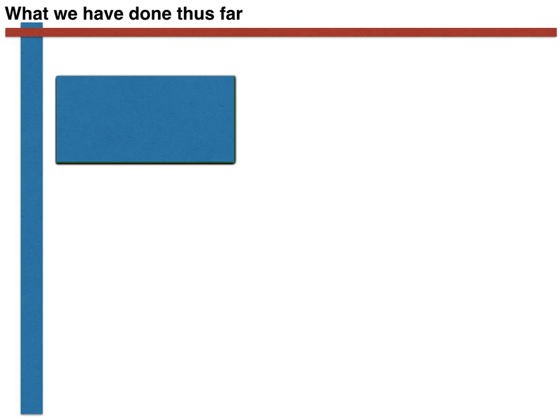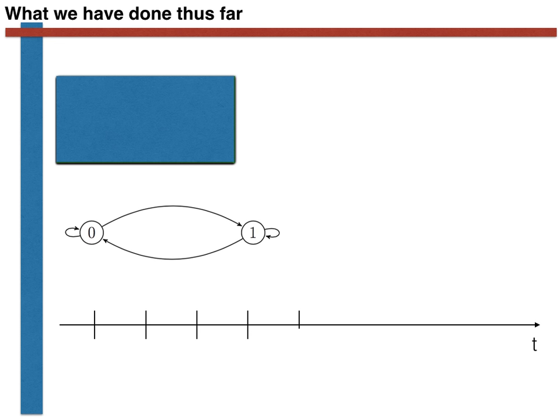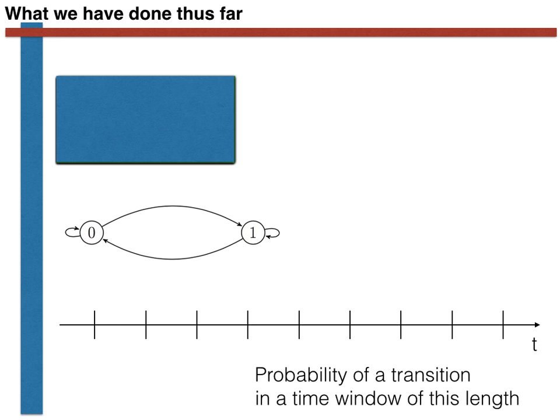We have learned in previous videos that we might describe this using a Markov chain, with a transition graph like that shown here. The two states here represent the blue and green states, and the transition probabilities that are in our one-step transition probability matrix would then represent the probability of transition between the blue and green states in a time window of length delta T.